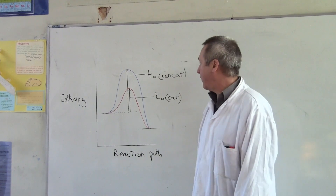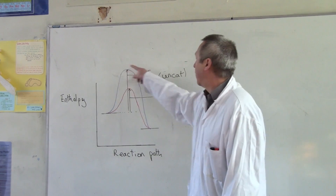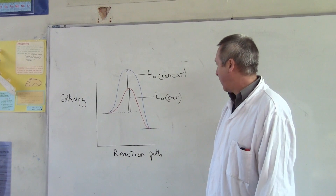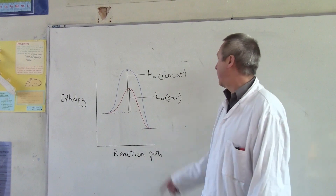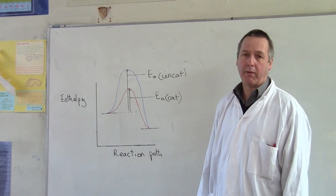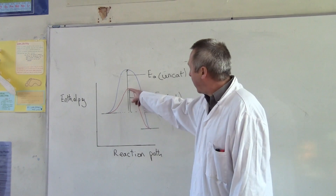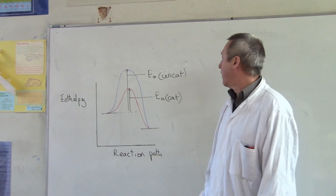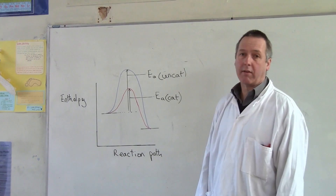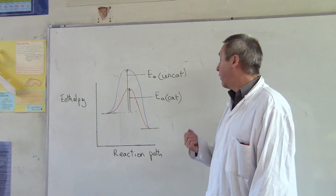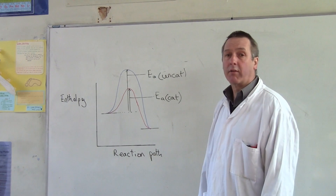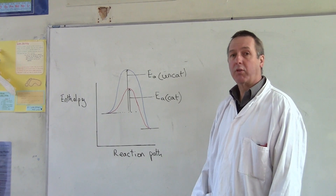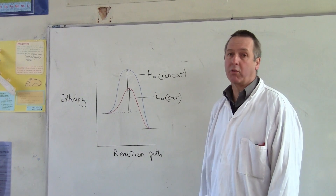If you look at this diagram, we can see that the blue curve represents the uncatalyzed pathway, and the red curve represents the catalyzed pathway. The activation energy for the catalyzed pathway is much lower than that for the uncatalyzed pathway, which means that more of the particles will have an energy greater than the activation energy, which results in a much quicker reaction.